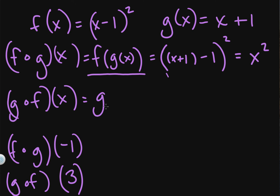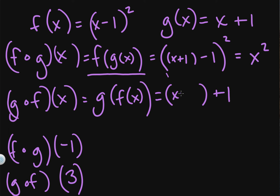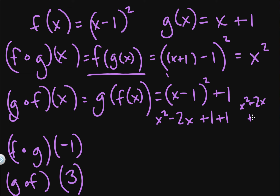Going the other way, g of f of x means I take my g of x function — x plus 1 — and replace x with f of x, which is (x minus 1) squared. We need to simplify: expanding gives x squared minus 2x plus 1, plus 1, which is x squared minus 2x plus 2. So that is your answer for g of f of x.